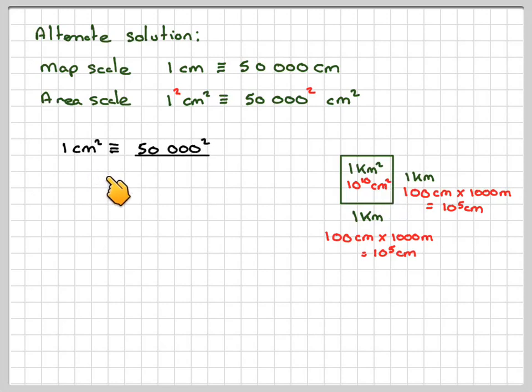1 centimetre squared will be equivalent to 50,000 squared centimetres squared divided by 10 to the power of 10, which will then convert it into kilometres squared. Which means that 1 centimetre squared will be 0.25 kilometres squared.